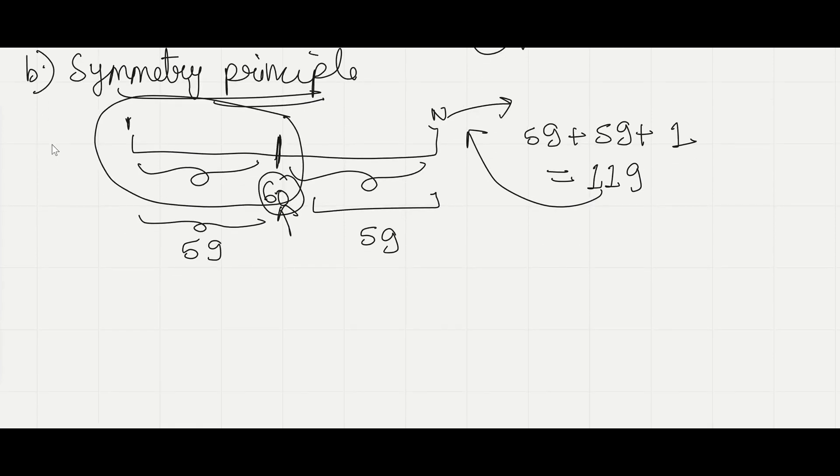Now, in the second part, it is given that we have seen 5 locomotives and the highest number that we have seen is 60. So again, seeing the 5 locomotives divides this segment into 6 parts. 1st locomotive, 2nd locomotive, 3rd locomotive, 4th locomotive and 5th locomotive. And the highest number that we have seen is 60.